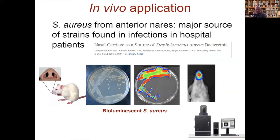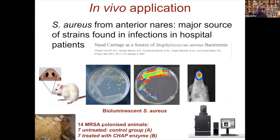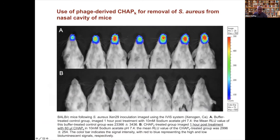For in vivo applications, we looked at the phage K endolysin against Staphylococcus aureus. We colonized 14 animals with a bioluminescent Staphylococcus aureus lighting up in the nares, since nasal carriage is one of the primary sources of S. aureus bacteremia in hospitals. Seven animals were left untreated and seven were treated with the endolysin. After one hour's exposure, the treated group showed no staphylococci present whatsoever, whereas the control group still showed the bioluminescent staphylococci.